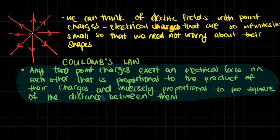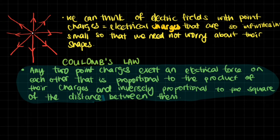Let's start by talking about point charges. We can think of electric fields with something called point charges. The whole point of a point charge is that it's so infinitesimally small that we need not worry about its shape — we assume it literally does not exist in size. For example, electrons can cause an electric field and electrons are infinitesimally small, so we don't really think of them as occupying space.